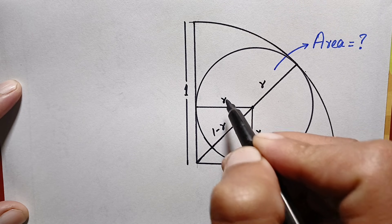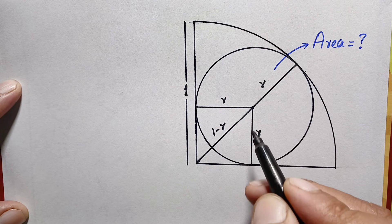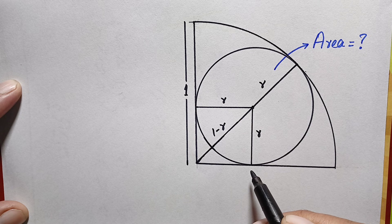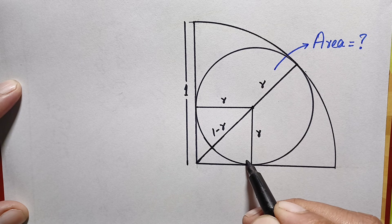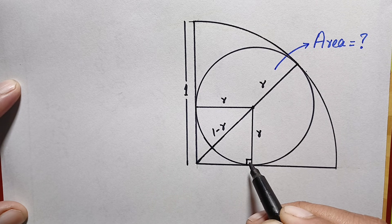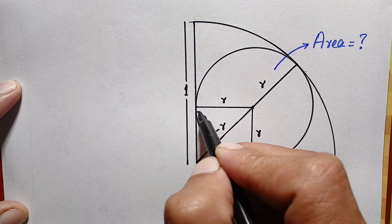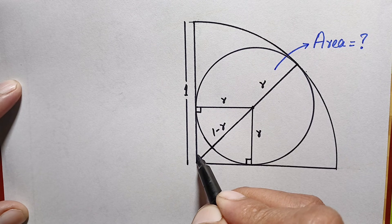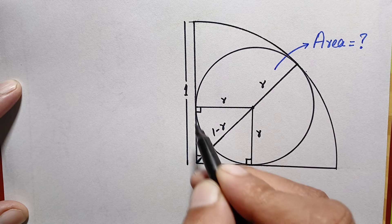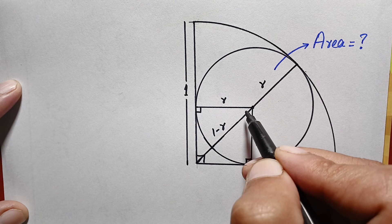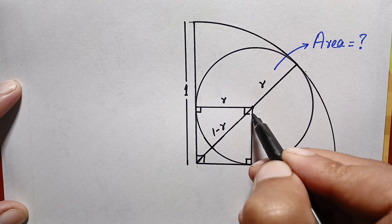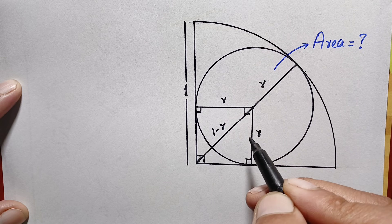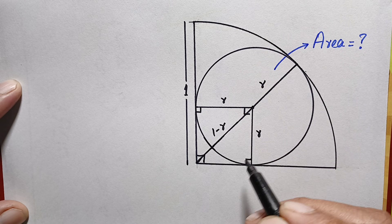As we know, the radius is always perpendicular to the tangent line at the point of tangency. So at both tangent points the angle will be a right angle, 90 degrees. Similarly, here the angle at both sides will be a right angle, and obviously this angle is also a right angle. If three angles are right angles, then the fourth angle will also be a right angle, so this shape is a square.